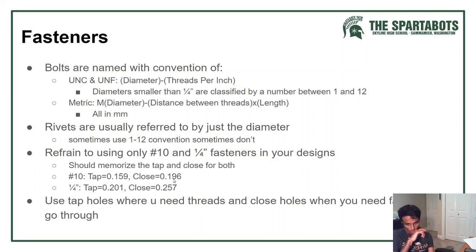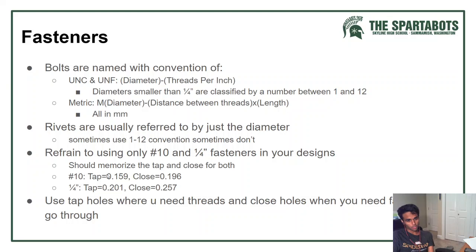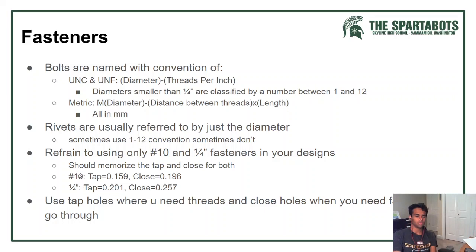Try to use only number 10 and quarter-inch fasteners for your designs — these are pretty standard numbers in FRC and engineering in general. Use number 10 and quarter wherever you can. For shafts you'll need to use quarter-20 specifically. You should memorize both the tap and close-fit dimensions for both. For number 10, the tap dimension is 0.159 inches and the close-fit dimension is 0.196 inches.